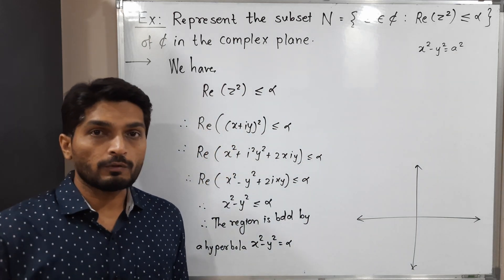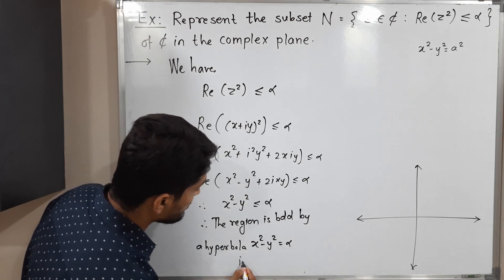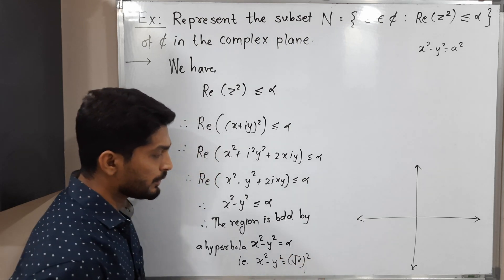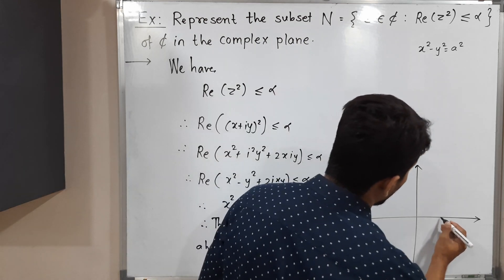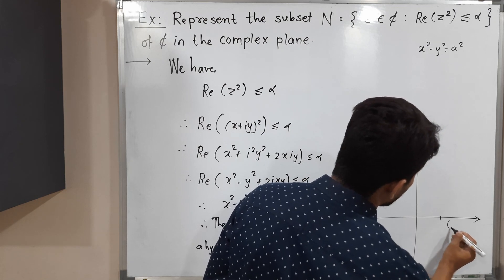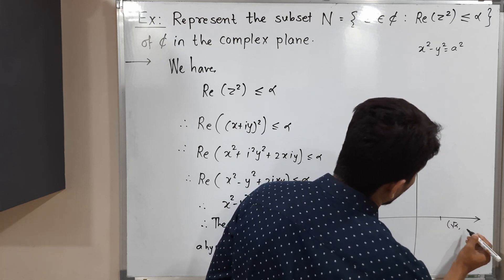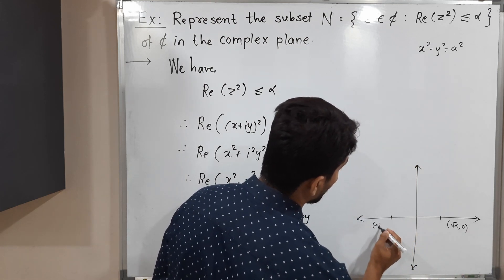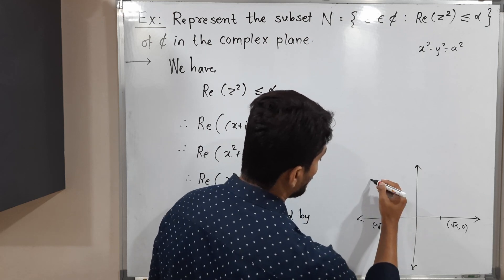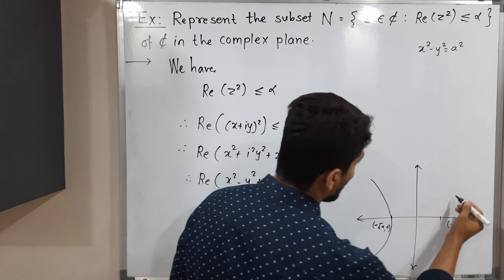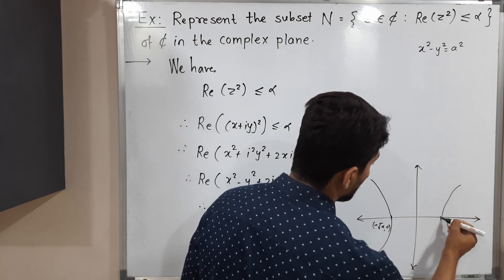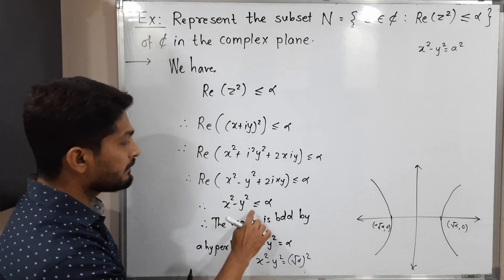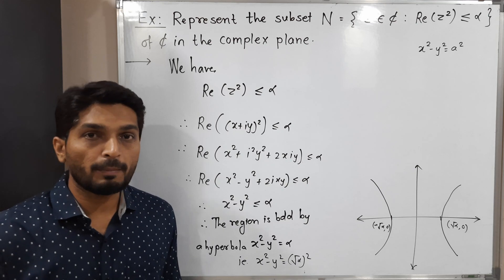Since we have alpha, we can write alpha as (√α)², so the equation becomes x² minus y² equals (√α)². The hyperbola cuts the real axis at the points (√α, 0) and (−√α, 0). So we have a hyperbola like this opening along the real axis.